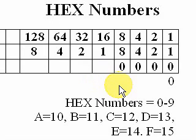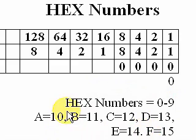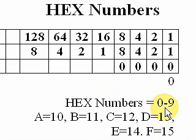Hello and welcome back. This is Greg French and today we're going to be talking about the hexadecimal numbering system. A hexadecimal numbering system is a base 16 numbering system. Hex numbers range from 0 through 9, just like decimal, but we add an additional 6 characters, A through F, that increases our numbering system to a base 16.